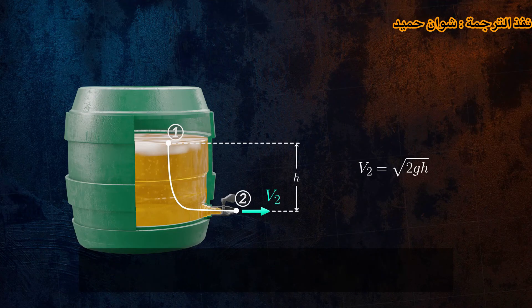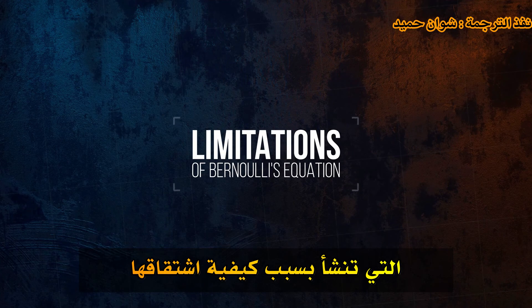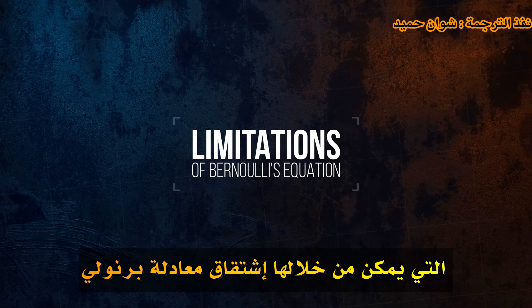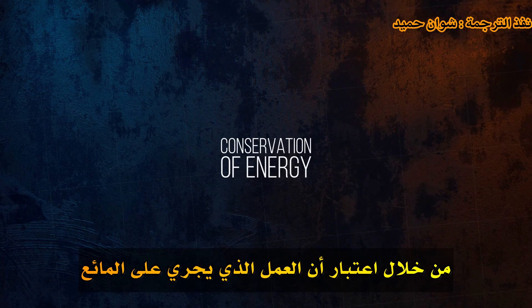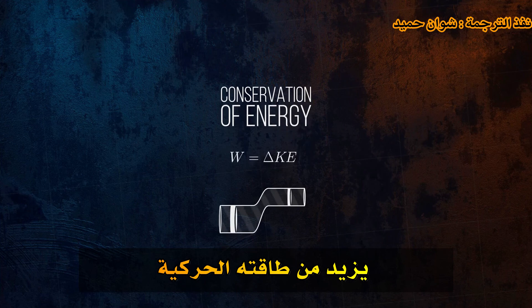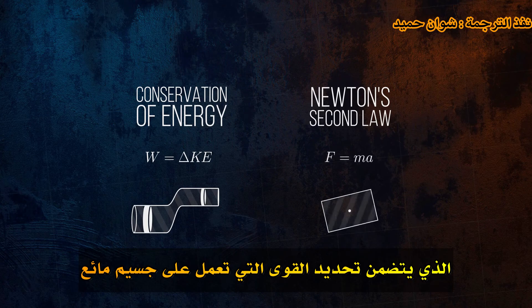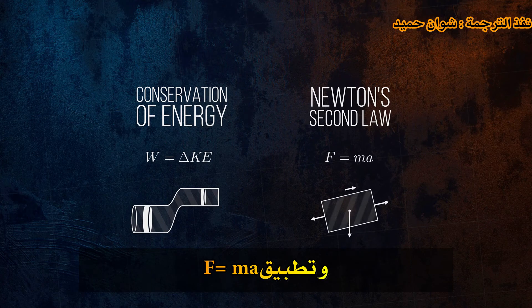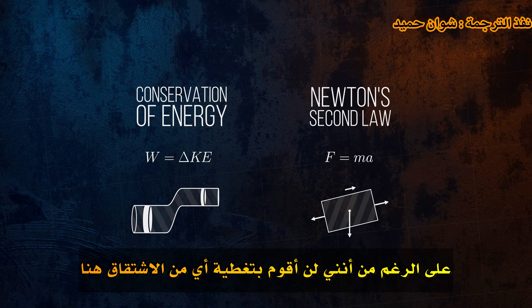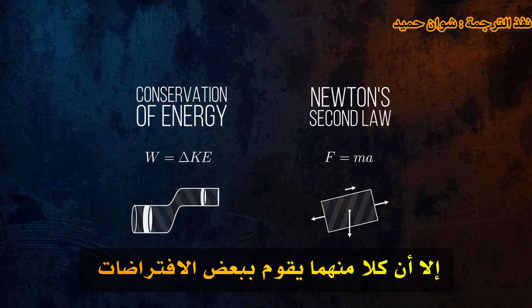But to use it correctly, it's important to have an understanding of the limitations of the equation, which arise because of how it's derived. There are several different ways Bernoulli's equation can be derived. It can be derived based on conservation of energy, by considering that the work done on the fluid increases its kinetic energy. Or it can be derived by applying Newton's second law, which involves determining the forces acting on a fluid particle and applying F equals mA. Although I won't cover either derivation here, they do both make some assumptions that we need to be aware of, since they limit how we can apply the equation. Firstly, the derivation of Bernoulli's equation assumes that flow is laminar and that it is steady, meaning that it doesn't vary with time.